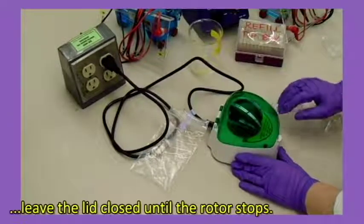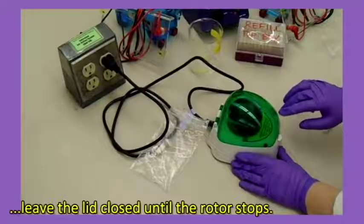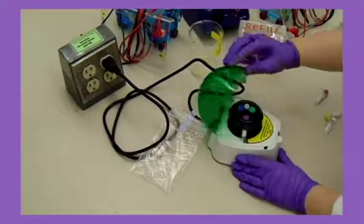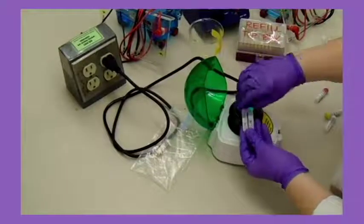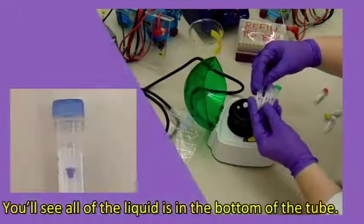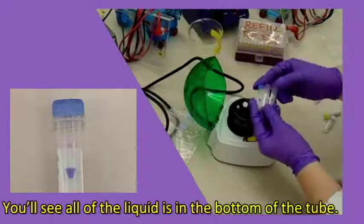When you turn it off, leave the lid closed until the rotor stops. You'll see all of the liquid is in the bottom of the tube.